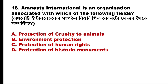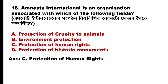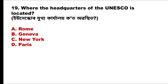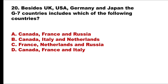Question 18: Amnesty International is an organization associated with which of the following fields? Amnesty International is associated with the protection of human rights. Question 19: Where is the headquarters of UNESCO located? The answer is option D, Paris.